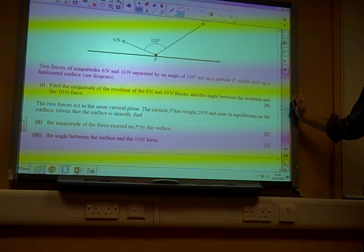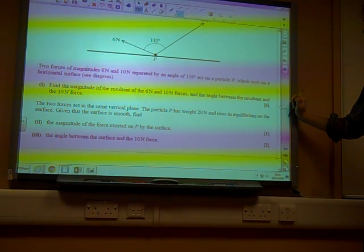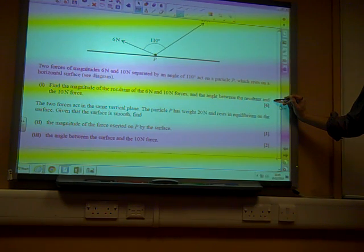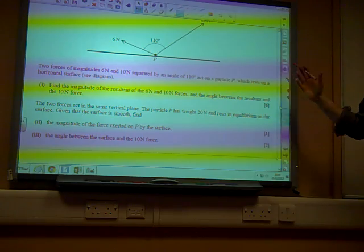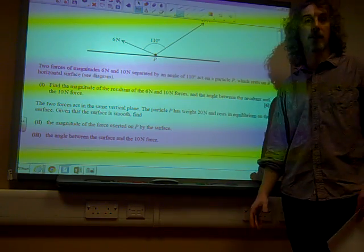There it is. Find the magnitude of the resultant of the 6 and 10 newton forces, and the angle between the resultant and the 10 newton force. Well, actually, to do this, let's strip this right down to all that the question is asking us about.